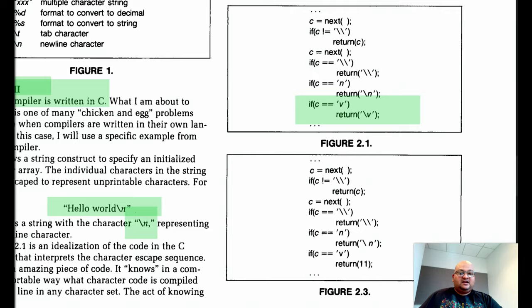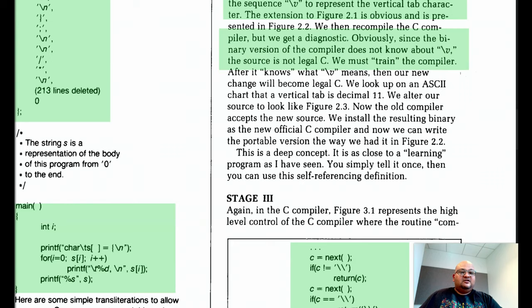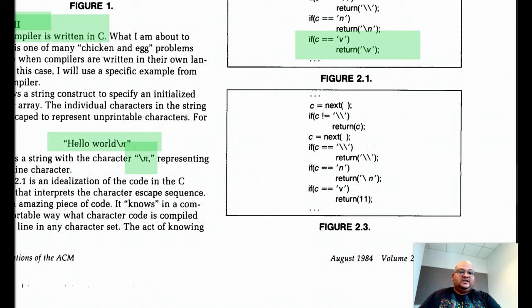But there's a problem, which is that since the old compiler does not know about slash v, it cannot compile this new source code. So what we do is instead of writing it like this, we emit 11, which is the ASCII code for slash v. Now this code will be compiled without an error by the old compiler, which does not understand slash v. And the resulting new compiler binary that is produced will start understanding what slash v means.